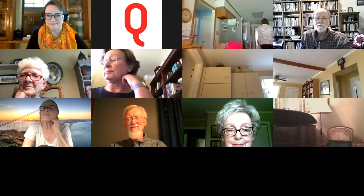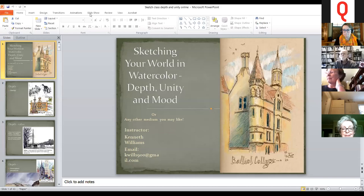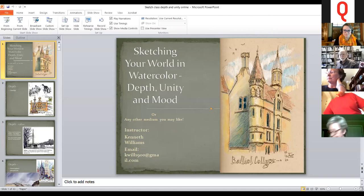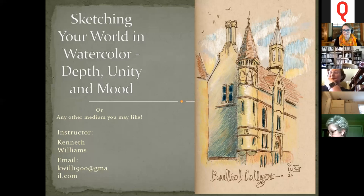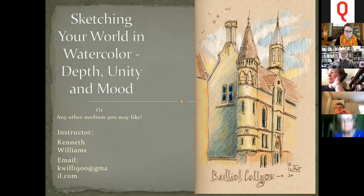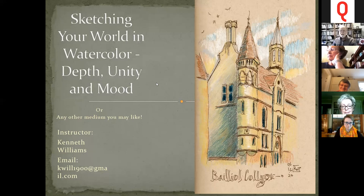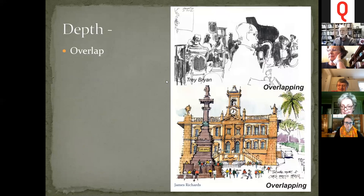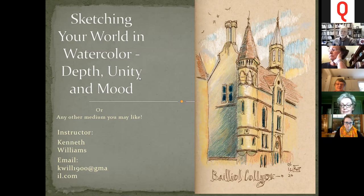The instructor grabs a timer and gets set up. He notes that last week he ran out of time before covering depth, so this week he wants to cover depth and unity — tying a picture together so it's all one unit and not two or three pictures trying to get out at the same time. He also mentions a bonus six-page handout he wrote on mood, included with the session materials.